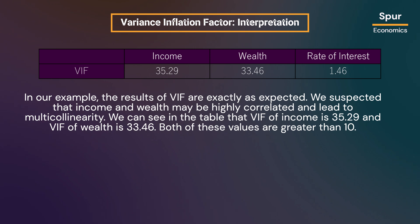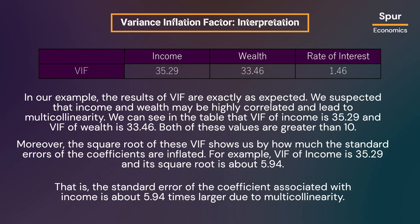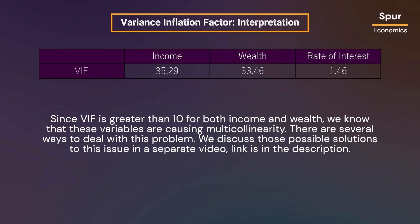In our example, the results of VIF are exactly as expected. We suspected that income and wealth may be highly correlated and lead to multicollinearity. We can see in the table that the VIF of income is 35.29 and the VIF of wealth is 33.46 — both values are greater than 10. Moreover, the square root of these VIFs shows us by how much the standard errors of the coefficients are inflated. For example, the VIF of income is 35.29 and its square root is about 5.94, meaning the standard error of the coefficient associated with income is about 5.94 times larger due to multicollinearity. Since VIF is greater than 10 for both income and wealth, we know that these variables are causing multicollinearity.